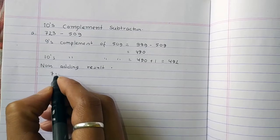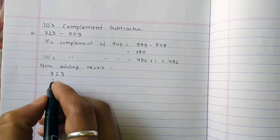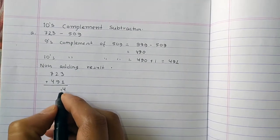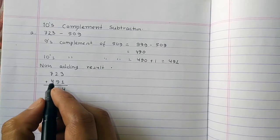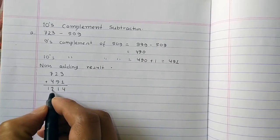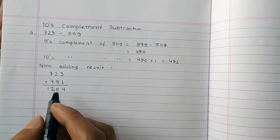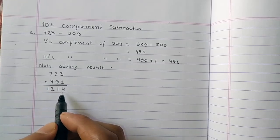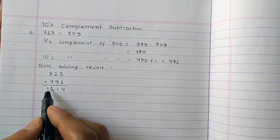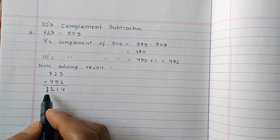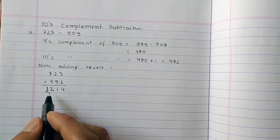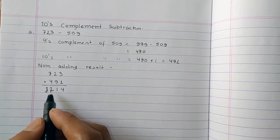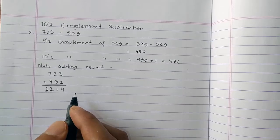Now adding the result: 723 plus 491. This gives us 1214. We have got an extra bit, a carry at the front.